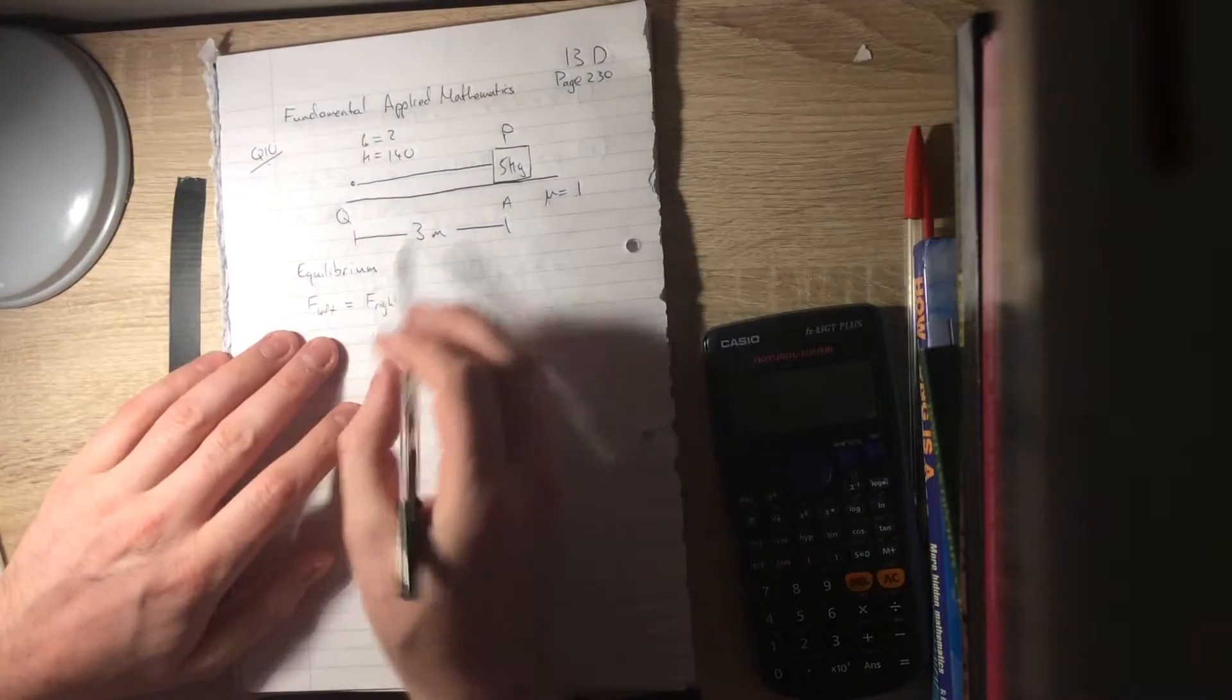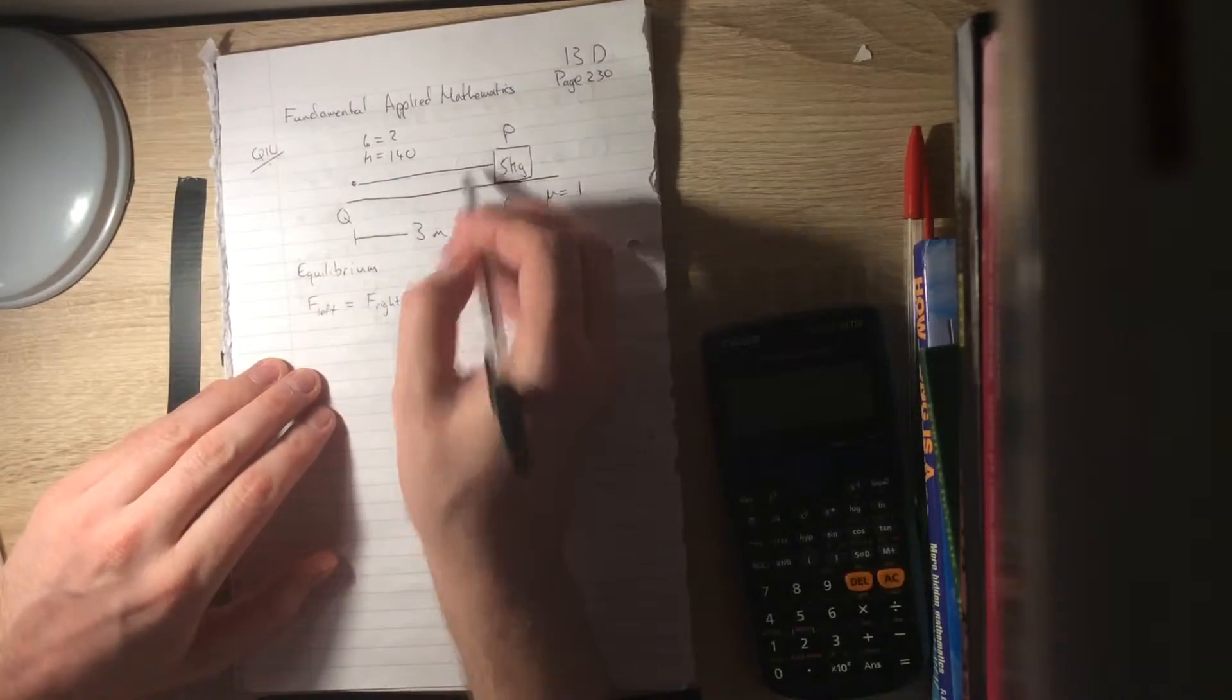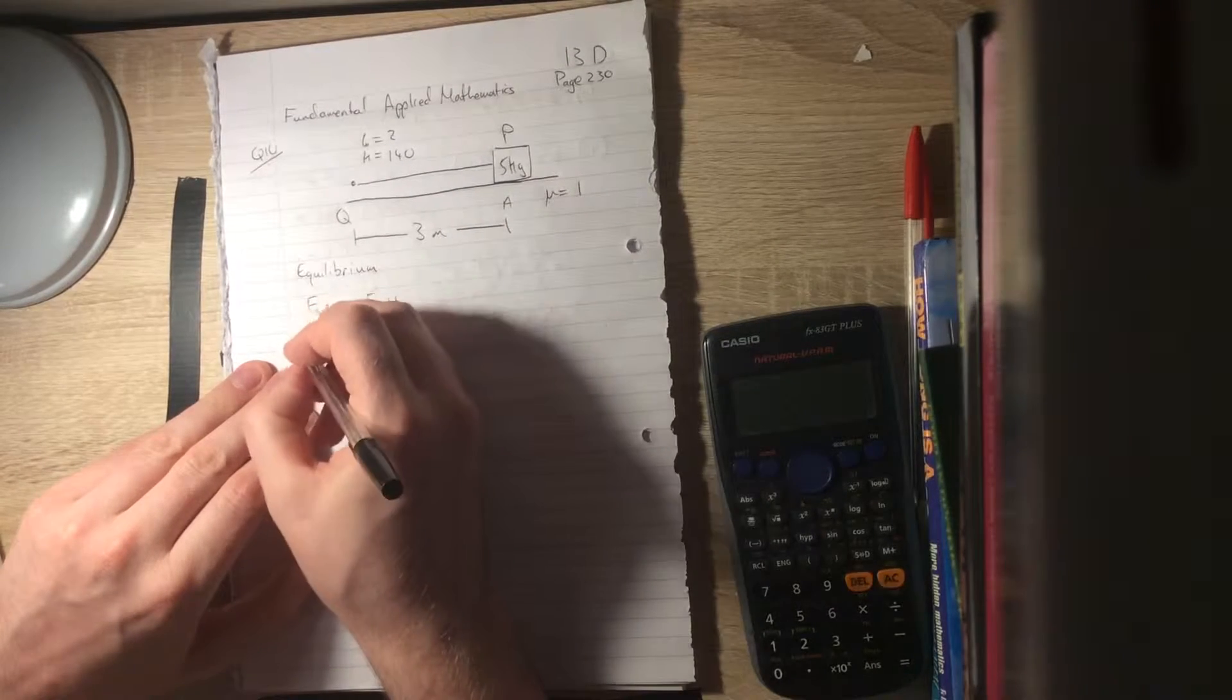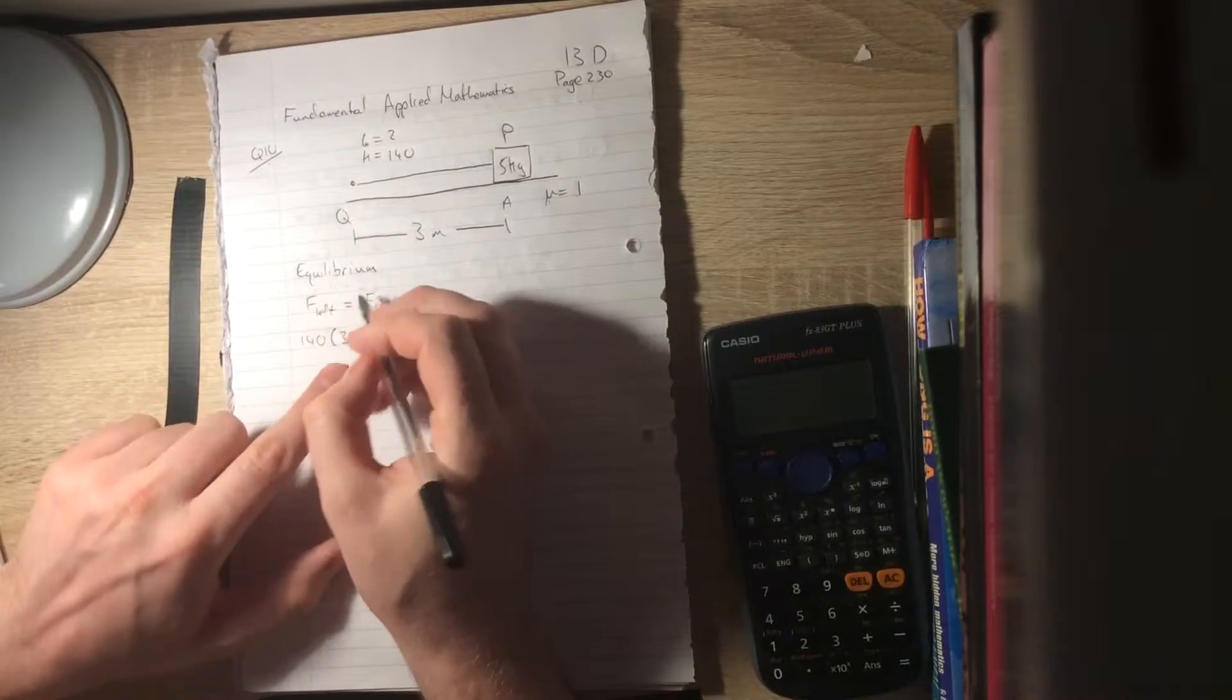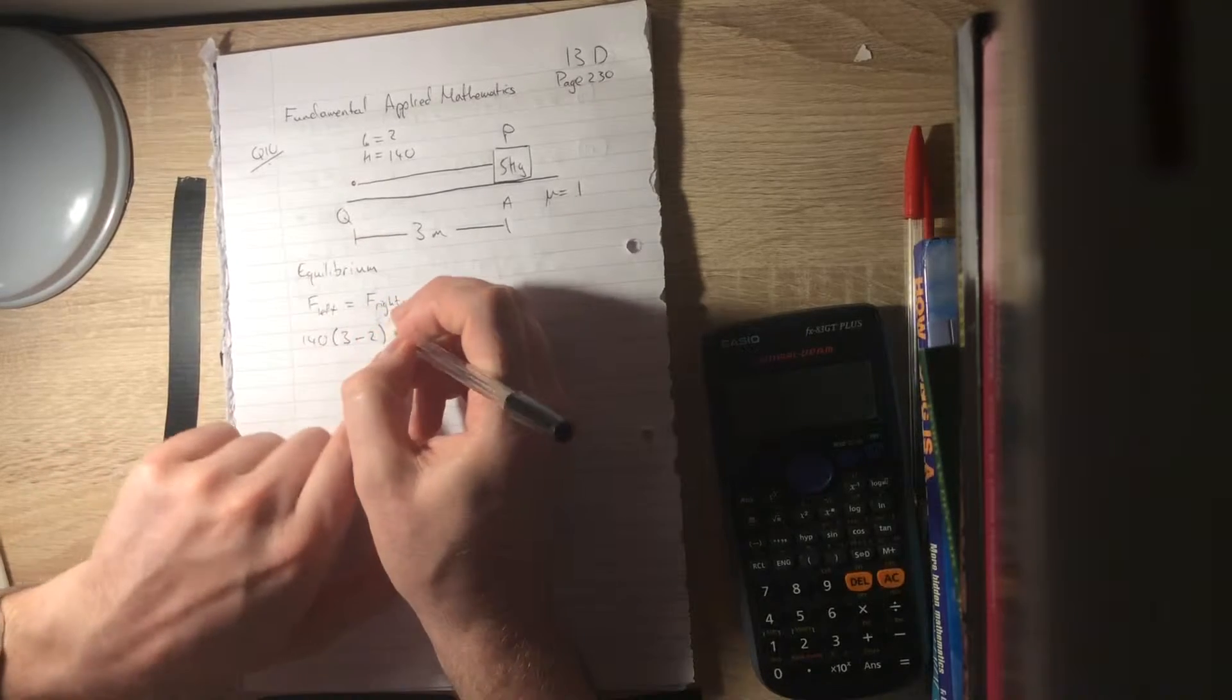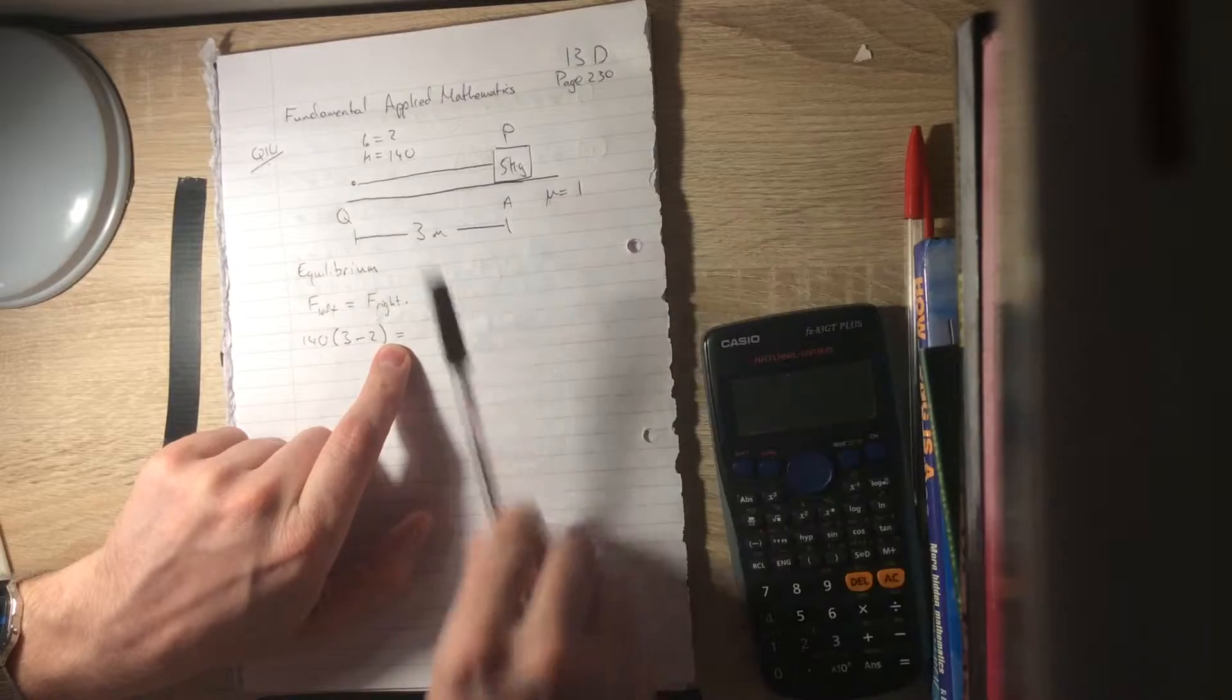So forces to the left equal forces to the right. Forces to the left are obviously from the stretched string, which has length 3 metres. So we're saying it's 140 times a 3 metre length minus the natural length of 2. And that will equal forces to the right, which are the frictional forces.